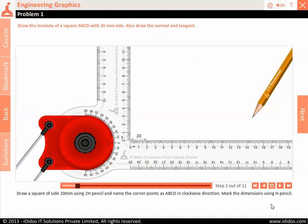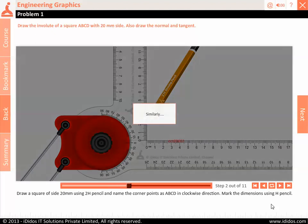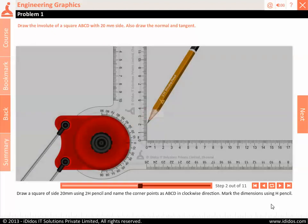Draw a square of side 20 mm using 2H pencil and name the corner points as ABCD in clockwise direction. Mark the dimensions using H pencil.